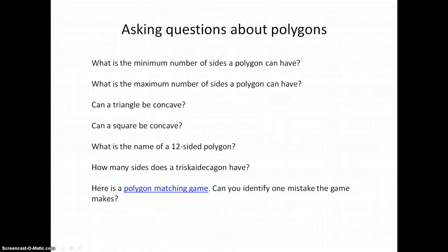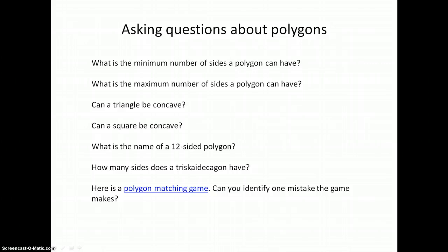Here are some questions you might ask yourself about polygons. What is the minimum number of sides a polygon can have? What's the maximum number of sides a polygon can have? Can a triangle be concave? Can a square be concave? What is the name of a twelve-sided polygon?